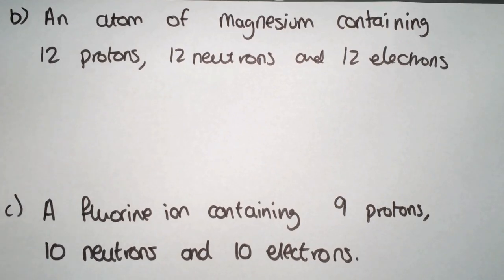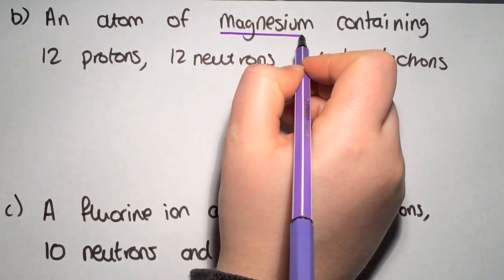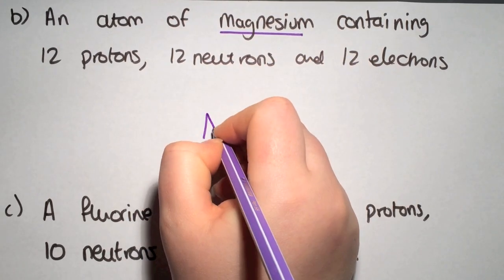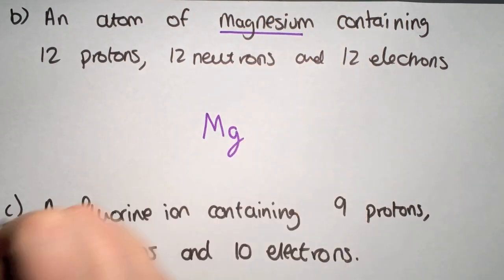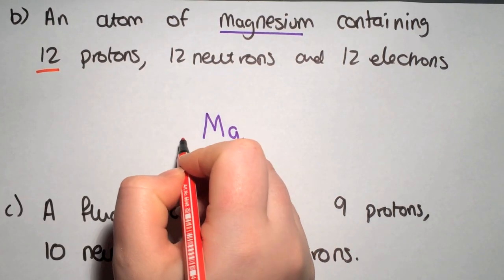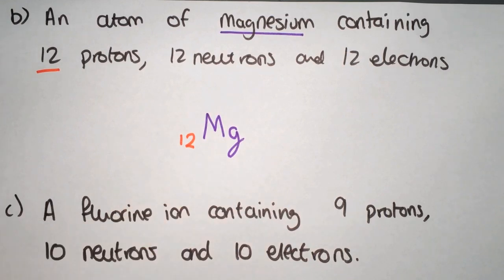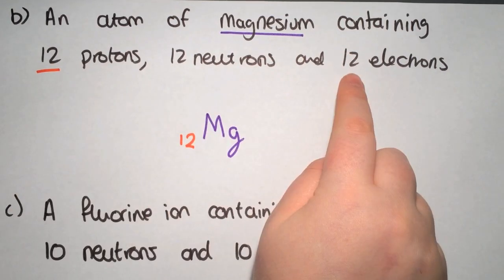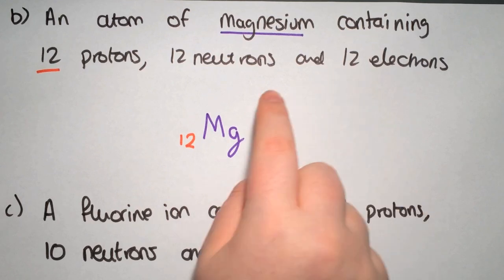Here is another example. So we are looking at magnesium, symbol Mg. You will be able to get that from your data book. It says that we have 12 protons. So 12 goes on the bottom left. It also says that we have 12 electrons so it must be balanced again so there will be no charge.